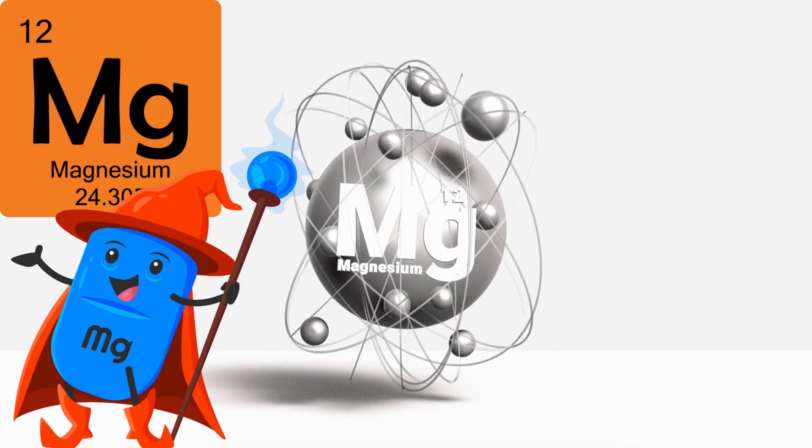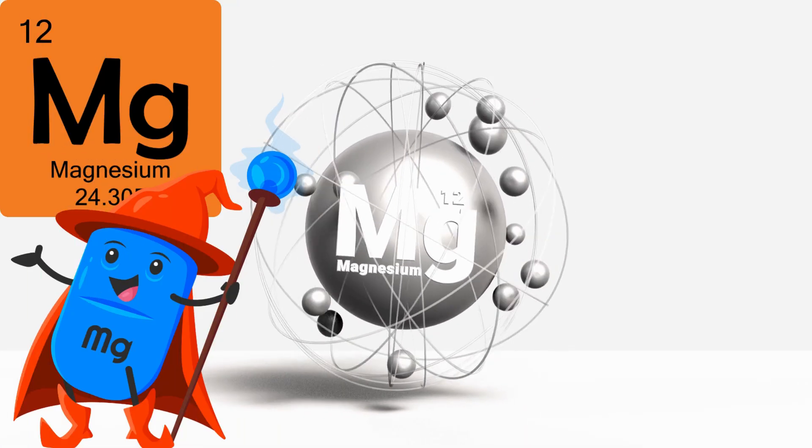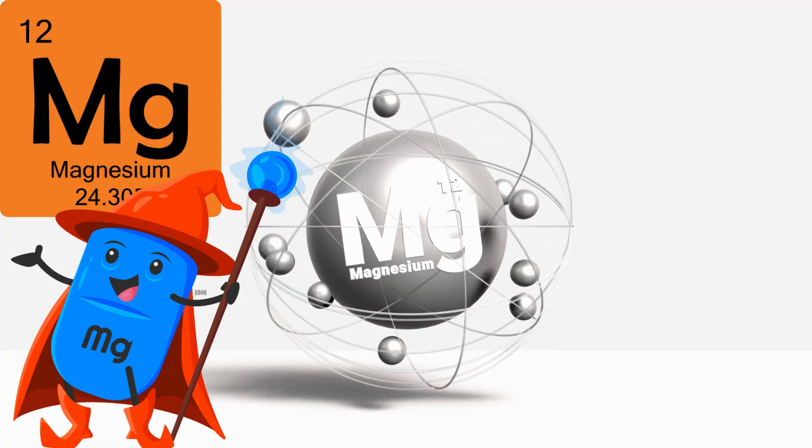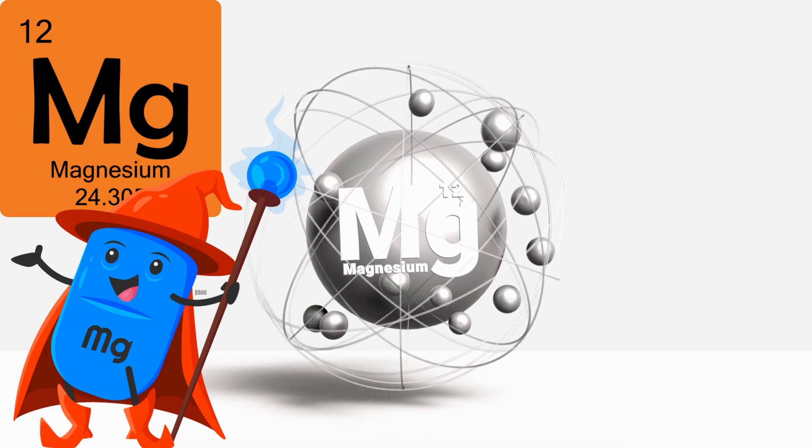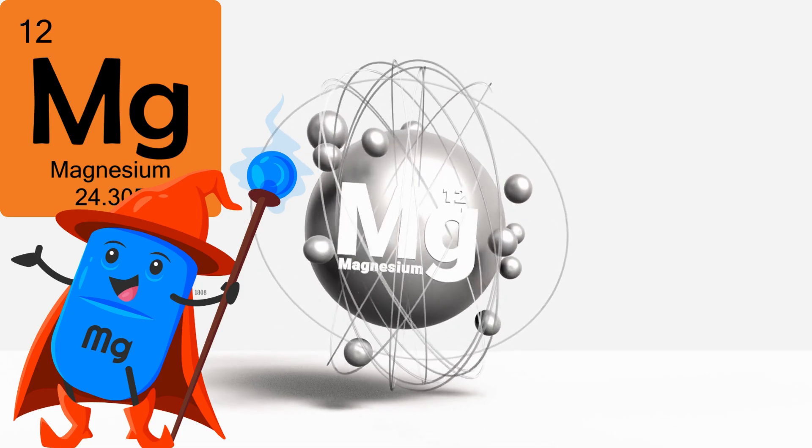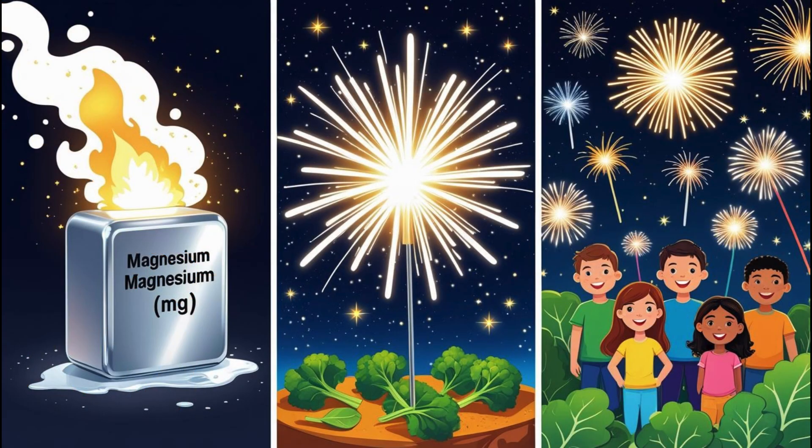Twelve. Magnesium. Magnesium is a metal that burns with a super bright white light. It's used in fireworks and sparklers to make them shine. It's also found in leafy green vegetables, and it helps keep our bodies healthy.